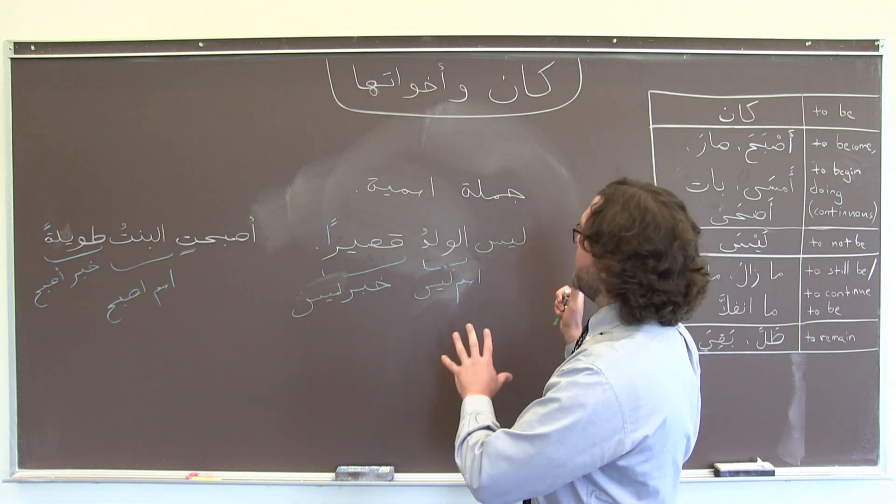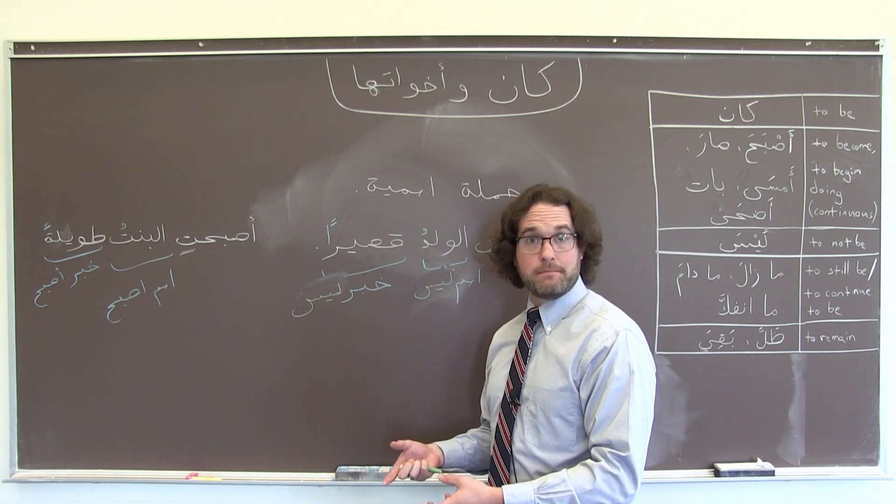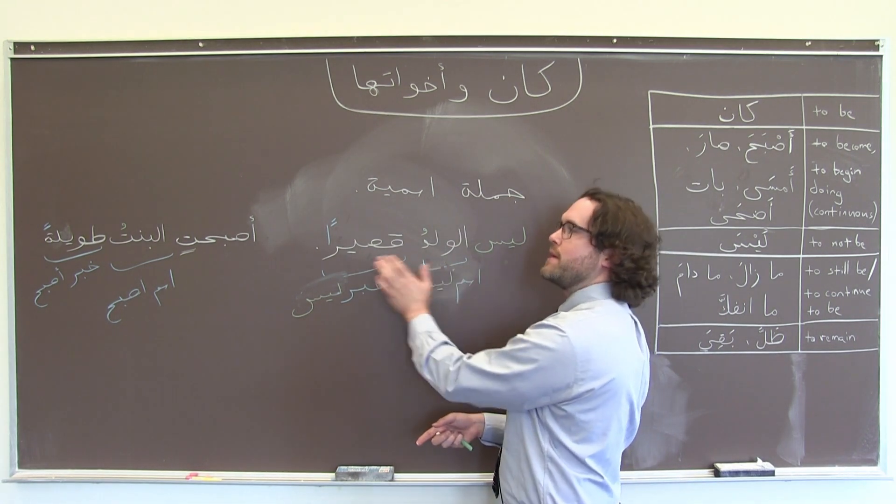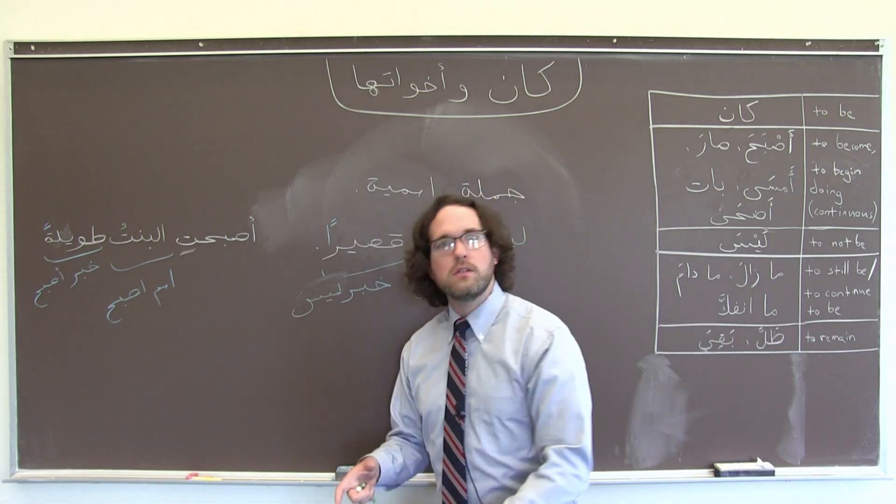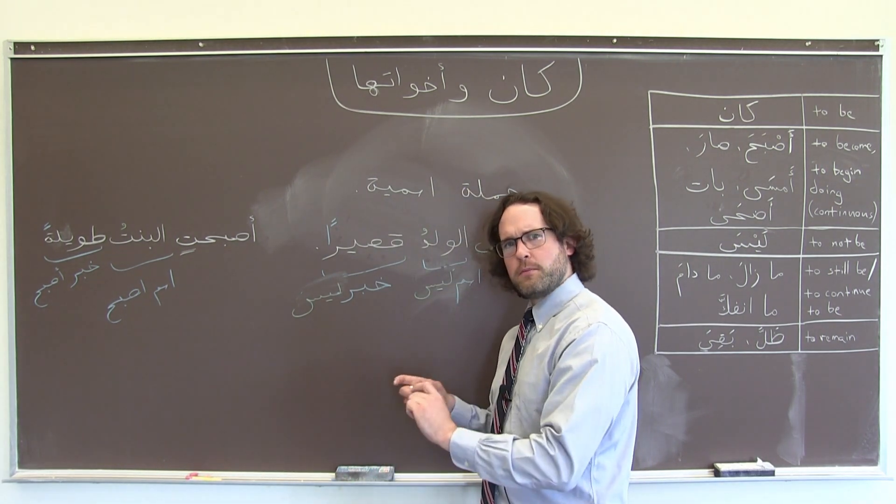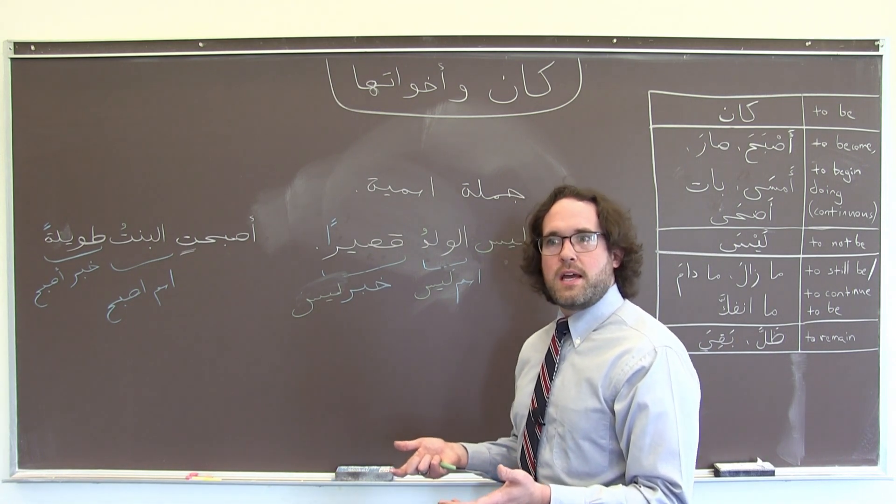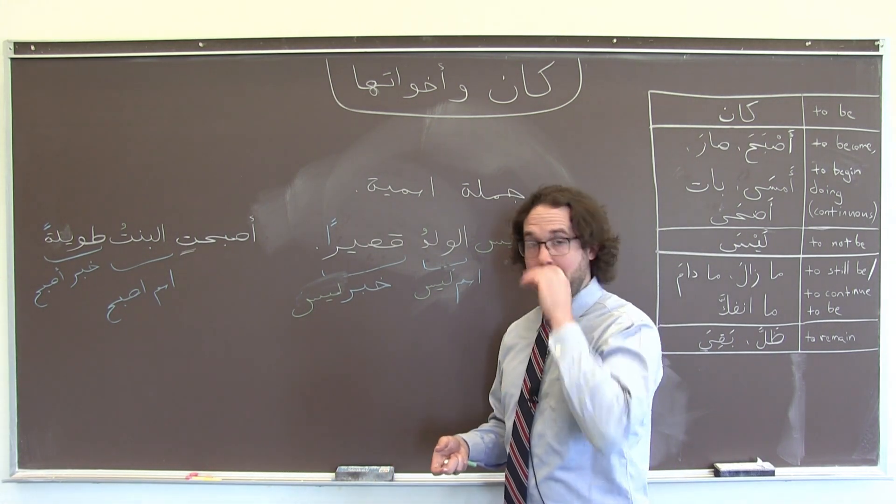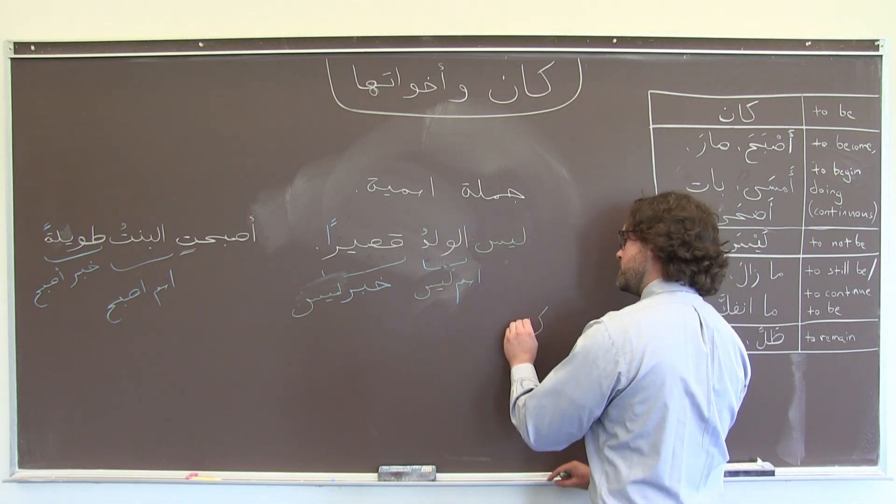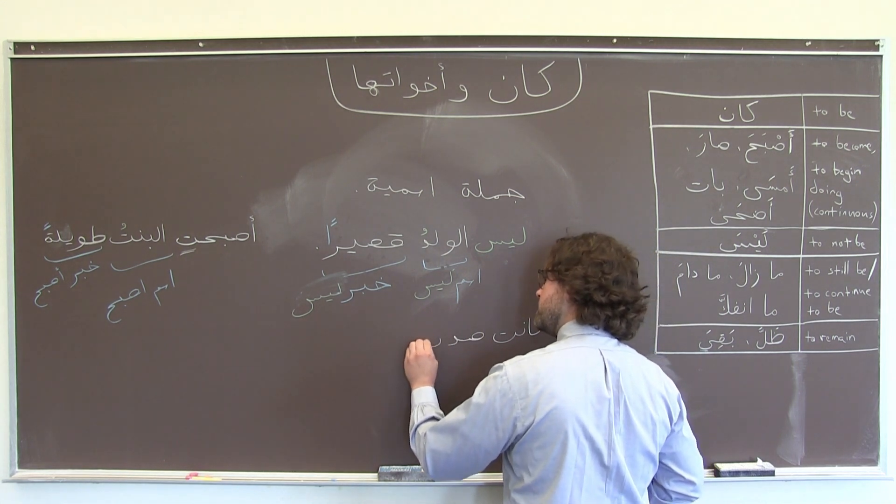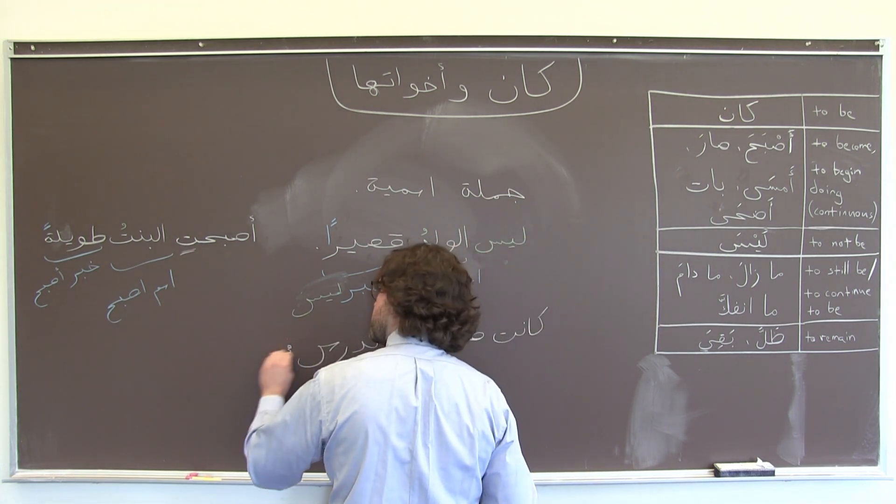The other thing that كَانَ وَأَخَوَاتِهَا can do for us is talk about actions happening, specifically, not just states of being, the boy is not short, or the girl became tall, but things that people were doing, or are still doing. We can sort of give a little more information about the time frame and the state of being while the action was happening. So if I want to say, my friend was studying in her room, I would say,